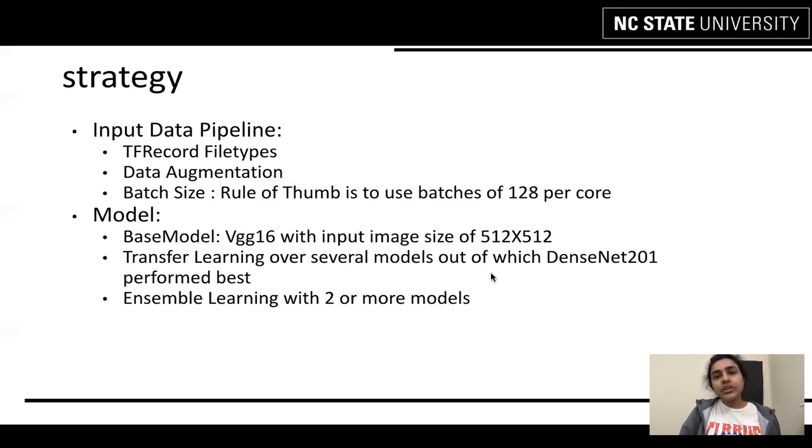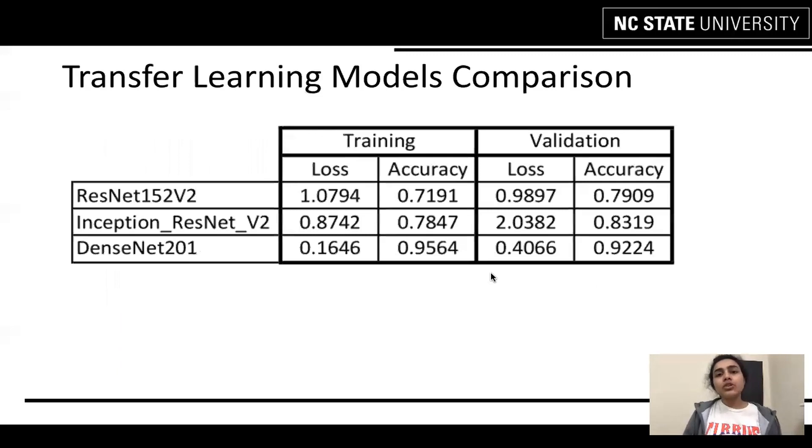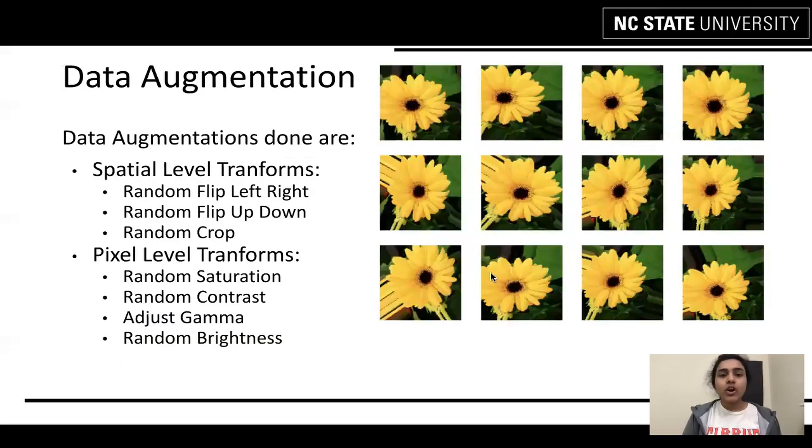We have used two different strategies for training our model, one Transfer Learning and another Ensemble Learning. The base model provided by Kaggle itself was VGG 16 with an input image size of 512 x 512. We added a global average pooling layer and finally our softmax layer. Later on, we went on to use several other training models such as ResNet, Inception and DenseNet. In case of data augmentation, we initially started with spatial-level transforms such as left-right and up-and-down transformation and cropping the image.